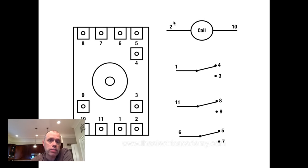The difference is, the wiring is a little bit different from the coil. Your 2 and your 10 is now your coil, and then you just go 1 to 4 is normally closed, 1 to 3 is normally open, 11 to 8 is normally closed, 11 to 9 is normally open, 6 to 5 is normally closed, 6 to 7 is normally open. Three sets of contacts.